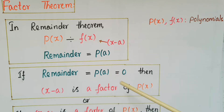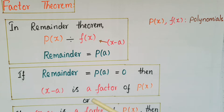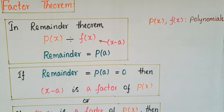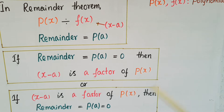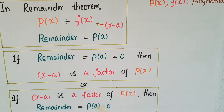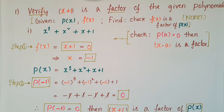But if the remainder p(a) is equal to 0, then x minus a is a factor of p(x). This is called the Factor Theorem. Or we can say, if x minus a is a factor of p(x), then the remainder p(a) is equal to 0.